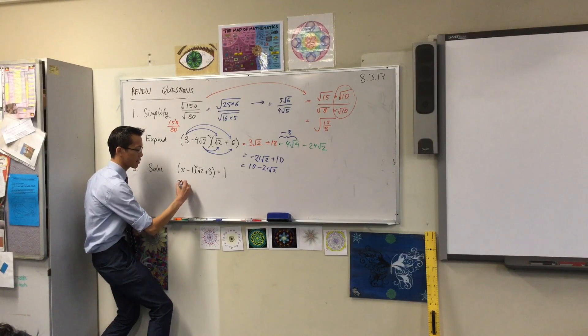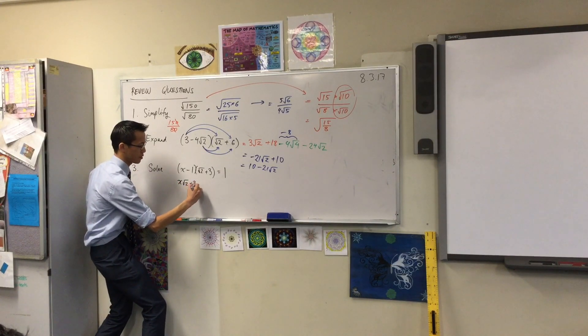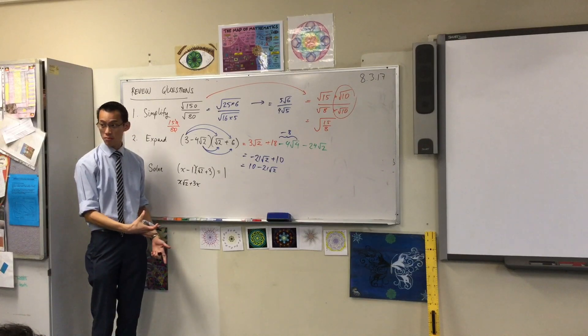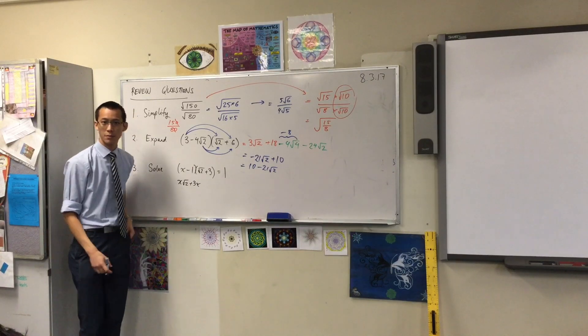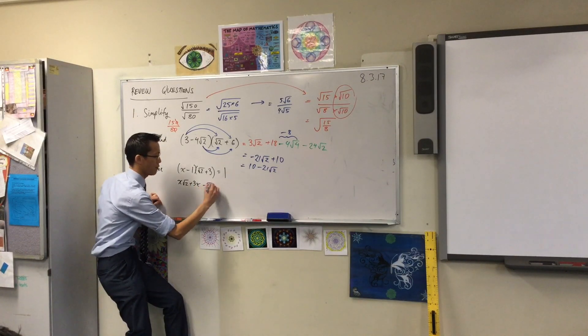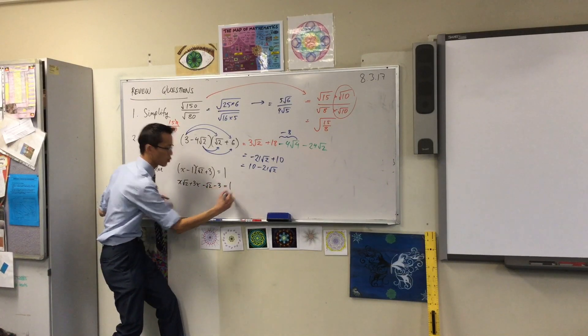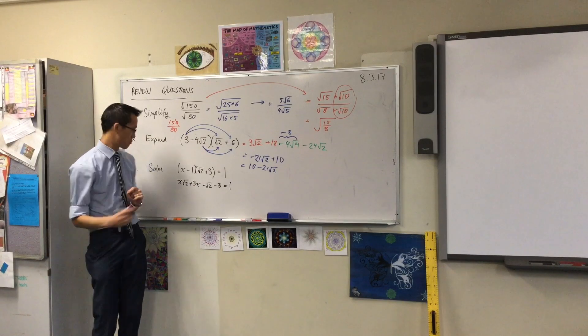I could expand the whole thing. Let's have a go. x root 2 plus 3x. Do you agree that's my first pair? What's the second pair? Minus root 2 minus 3. So far, so good?